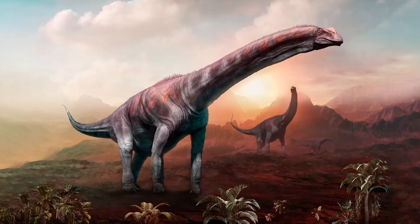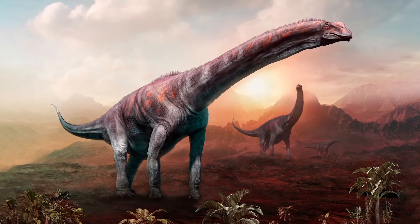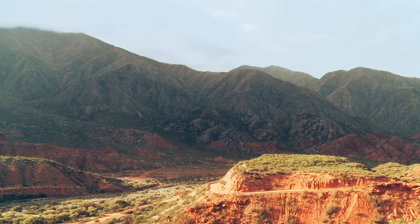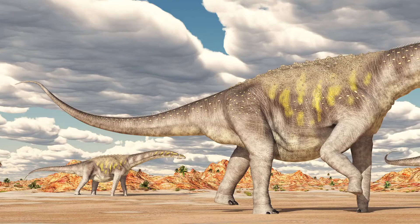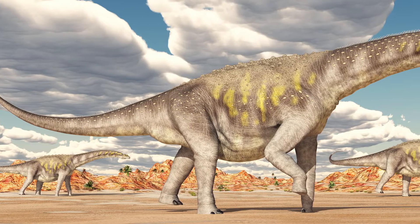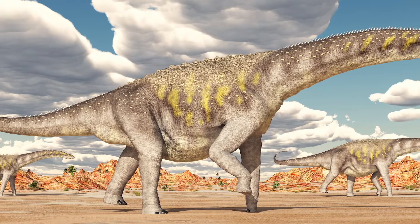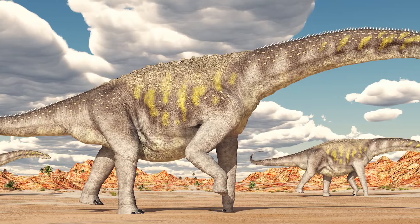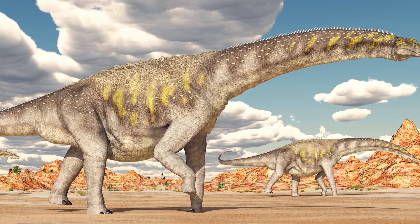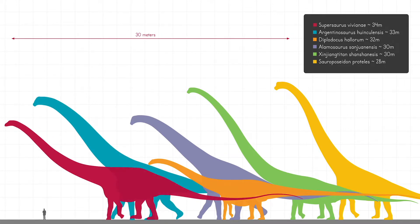One sauropod currently holds the distinction of being considered the largest dinosaur of all time. This is the massive Argentinosaurus, named for its discovery in Argentina. Only a small portion of this skeleton has been found, but using reconstruction methods, paleontologists estimate that this behemoth stretched about 30 to 40 meters from head to tail — that's anywhere from 100 to 130 feet long. From ground to head, it stood 20 meters, or about 65 feet tall. Some other sauropods are believed to have been larger than Argentinosaurus, but there is not enough evidence yet to support this. So Argentinosaurus remains the record holder for the time being.